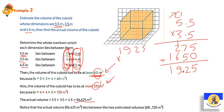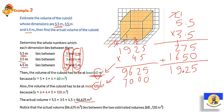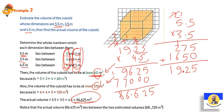Now multiply 19.25 by 4.5 — write as 1925 and 45. 5×5=25 carry 2; 5×2=10+2=12 carry 1; 5×9=45+1=46 carry 4; 5×1=5+4=9. Put 0. Then 4×5=20 carry 2; 4×2=8+2=10 carry 1; 4×9=36+1=37 carry 3; 4×1=4+3=7. Make addition: 5, 2, 6, then 9+7=16 carry 1, then 8. Decimal point before 3 digits. Answer: 86.625.